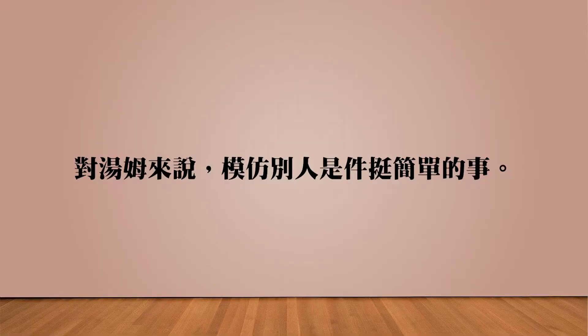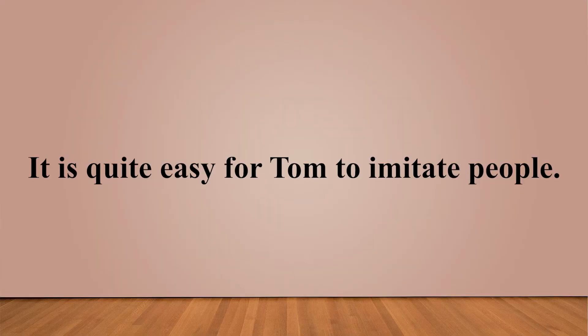再比较另一个例子：「对汤姆来说，模仿别人是一件简单的事情」，英文说：It is quite easy for Tom to imitate people. 这里用 for，因为 easy 描述的是「去模仿别人」这件事情，而非汤姆本人的特质。所以讲人用 of someone，讲事情用 for someone to do something。